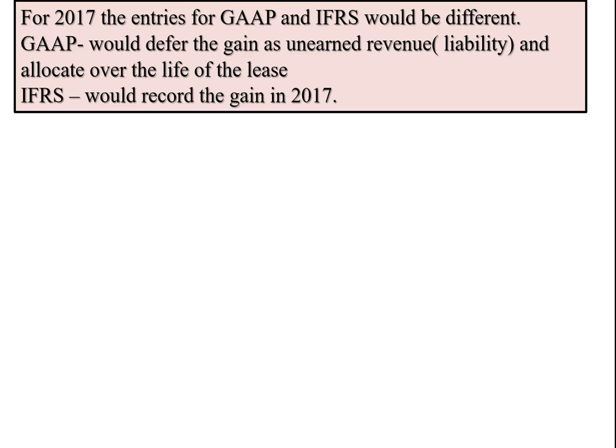For 2017, the entries for GAAP and IFRS would be different. GAAP would defer the gain as unearned revenue, setting it up as a liability, and allocate it over the life of the lease, which is five years. Under the international standard, the whole gain would be recorded in 2017.